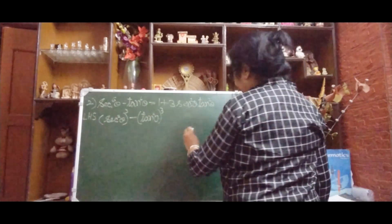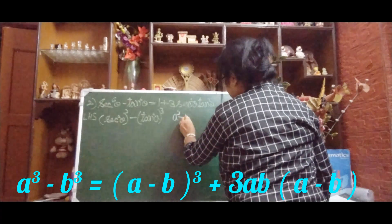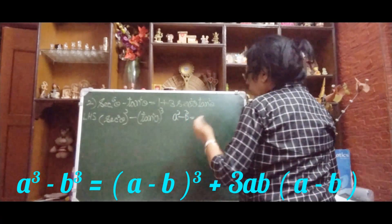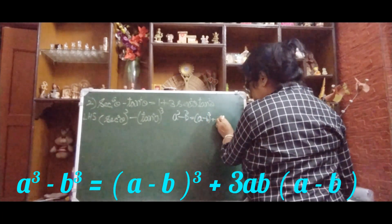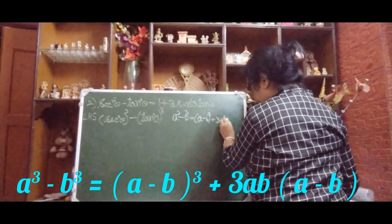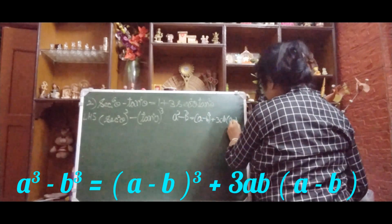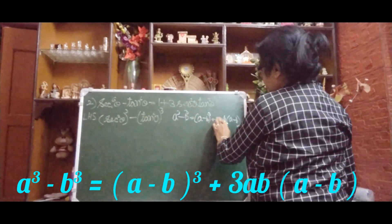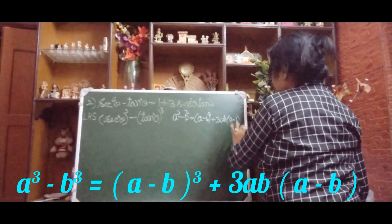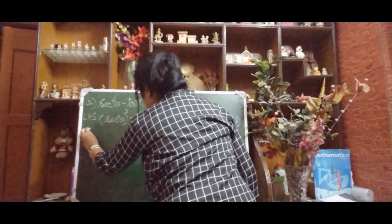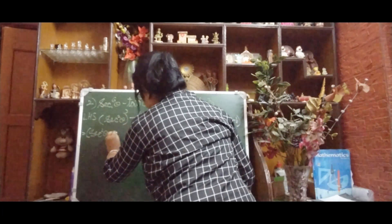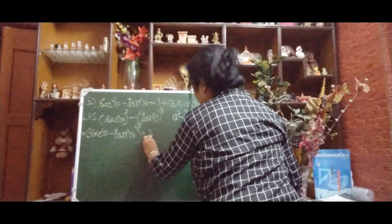Now you can see which formula we will use — we will use a³ − b³. The formula is: a³ − b³ = (a − b)³ + 3ab(a − b). Applying this, where a = sin²θ and b = tan²θ: we get (sin²θ − tan²θ)³ + 3·sin²θ·tan²θ·(sin²θ − tan²θ).